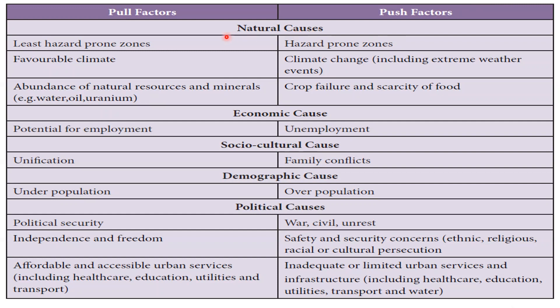Pull factors and push factors — natural causes: pull factors include least hazard exposure, favorable climate, and abundance of natural resources and minerals. When there is very little exposure to risk, the climate is favorable for living, and there are plenty of natural resources and minerals providing employment opportunities, people are naturally attracted to those areas. Push factors include areas more prone to natural hazards like floods, earthquakes, or civil war. Extreme climatic changes, frequent floods, crop failure, and continuous failure of rainfall leading to drought make people come out of their place. The main economic pull factor is better and potential employment opportunities; when there is a lack of employment opportunities, naturally people move out.